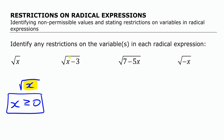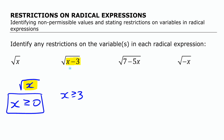Let's look at the second one: square root of x minus three. The expression underneath needs to be greater than or equal to zero. The values of the variable that make that happen — if you're going to subtract three — mean that x doesn't just have to be greater than or equal to zero; x has to be greater than or equal to three. If you put in three, you get zero; if you put in four, four minus three gives you one. Any number bigger gives a positive result. That's the restriction on that variable.